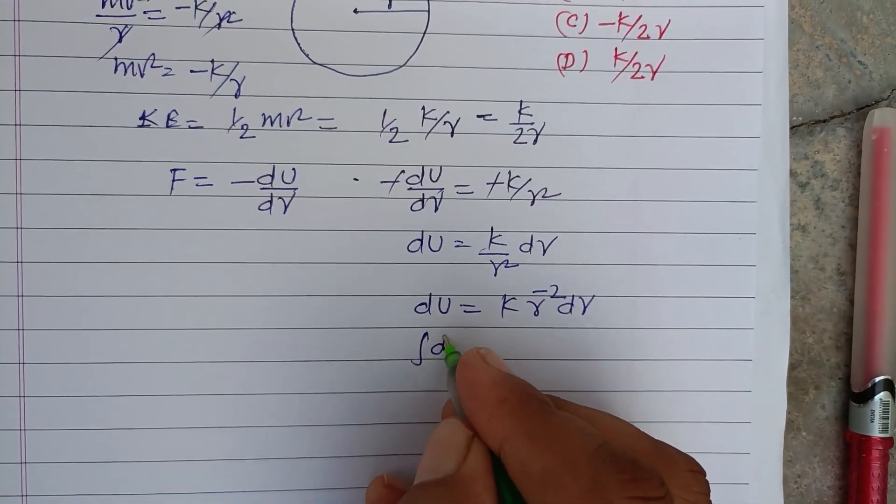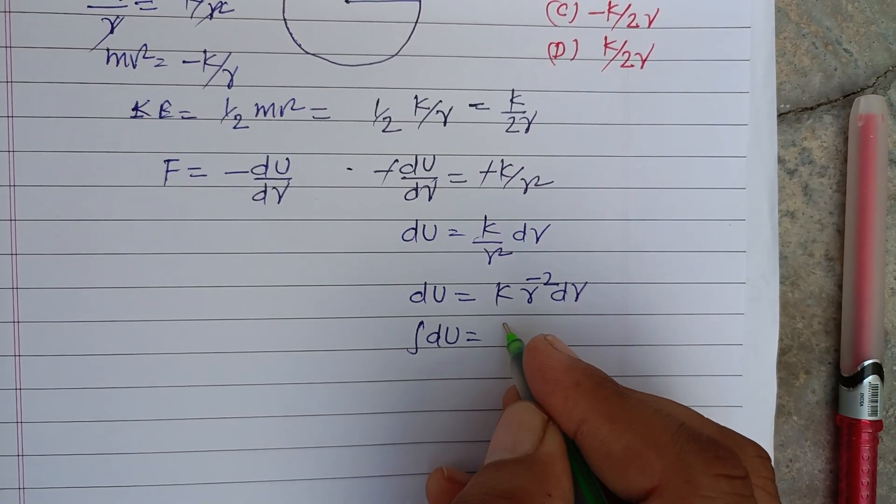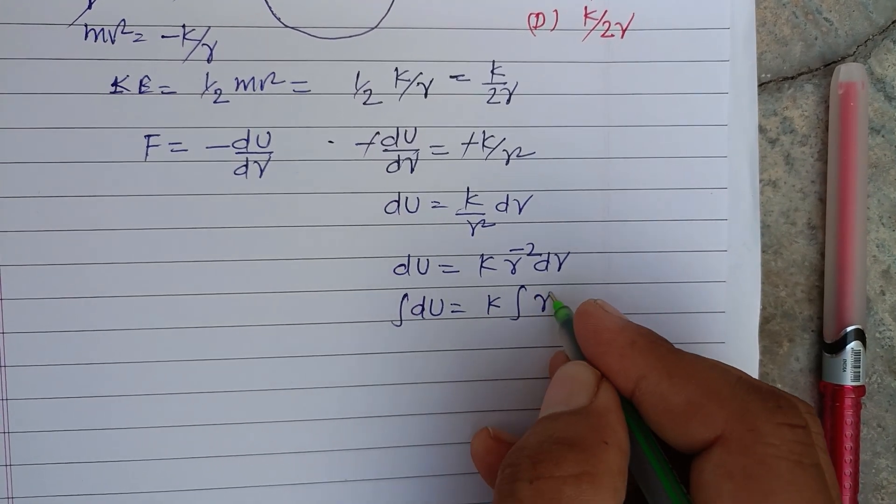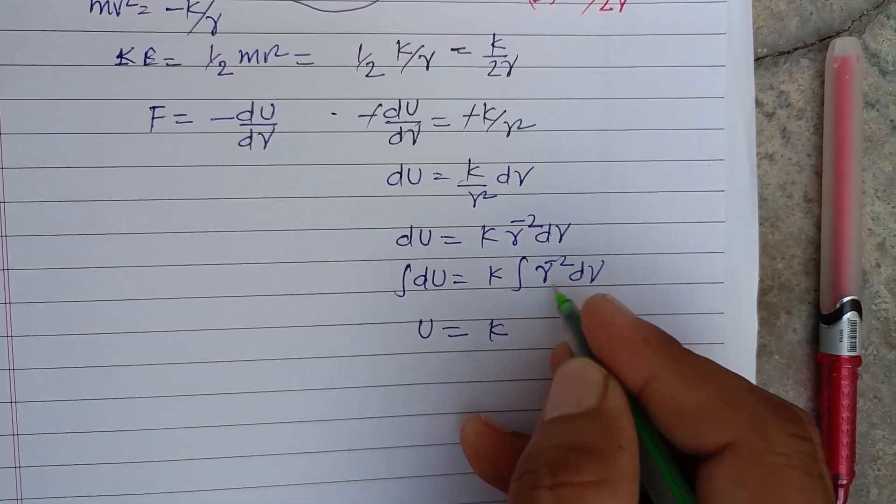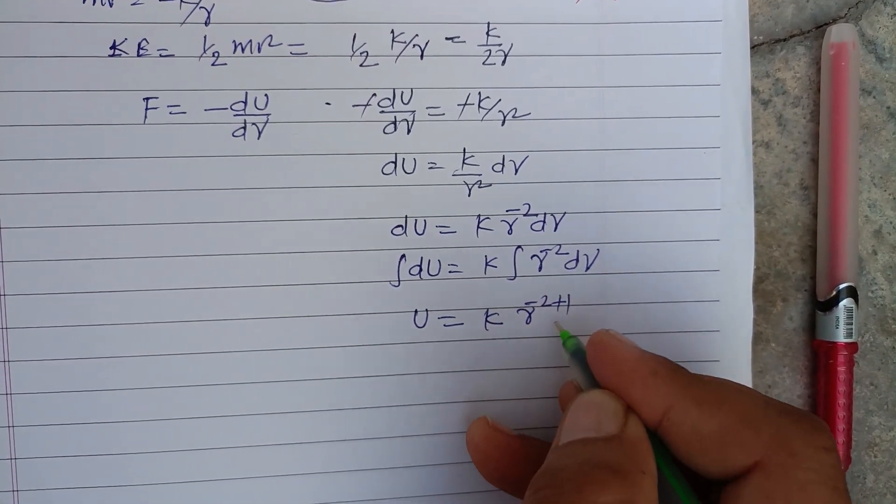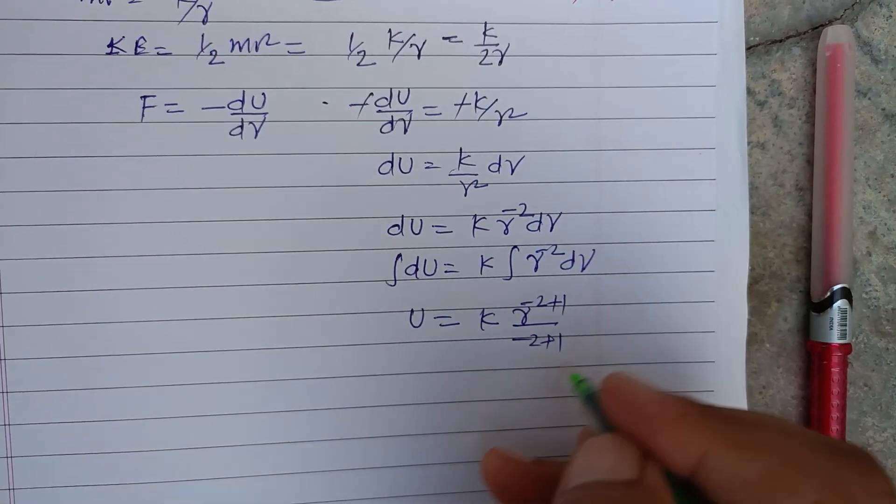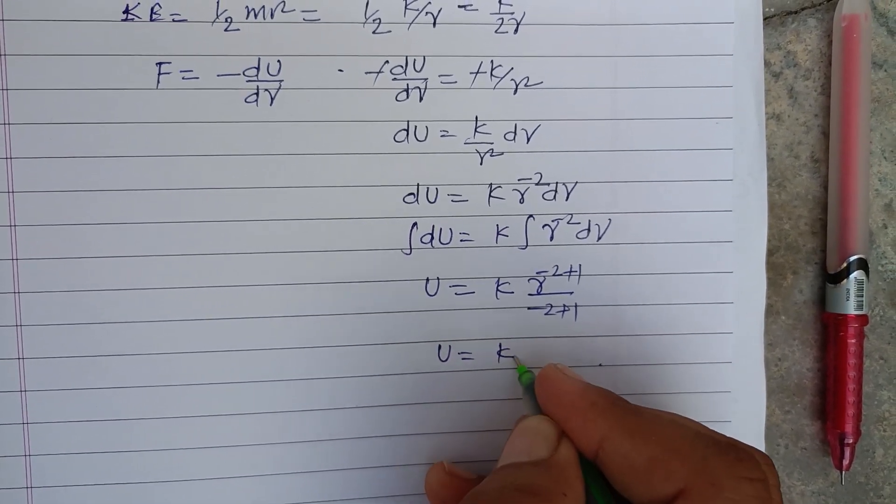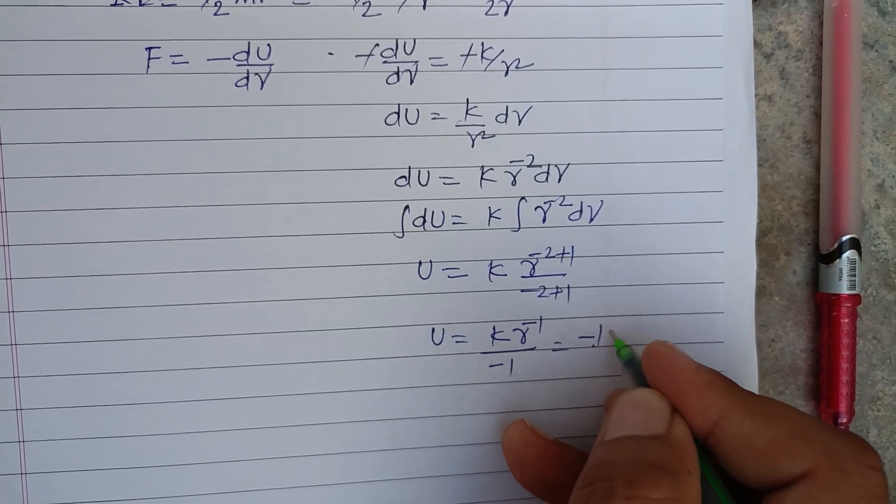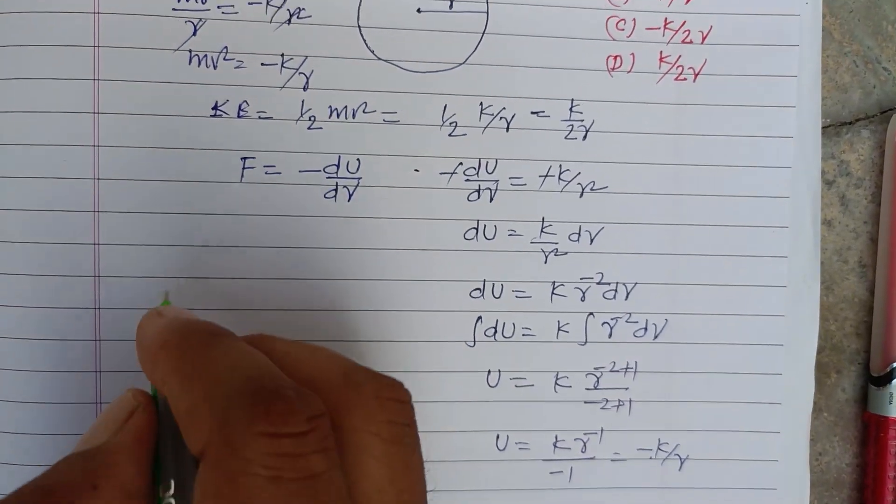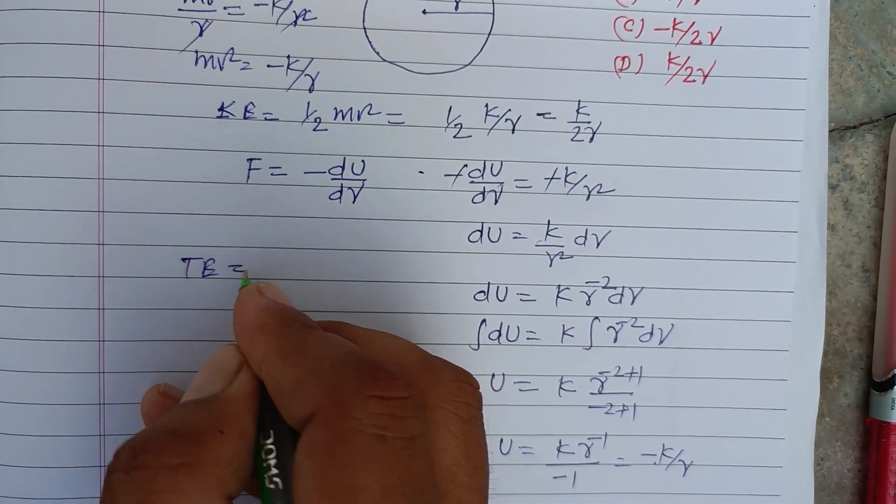Now integrating this, so integral dU equals K times integral R to the power minus 2 dR. This is U equals K times R to the power minus 2 plus 1 over minus 2 plus 1. So U equals K R to the power minus 1 over minus 1, that is minus K over R.